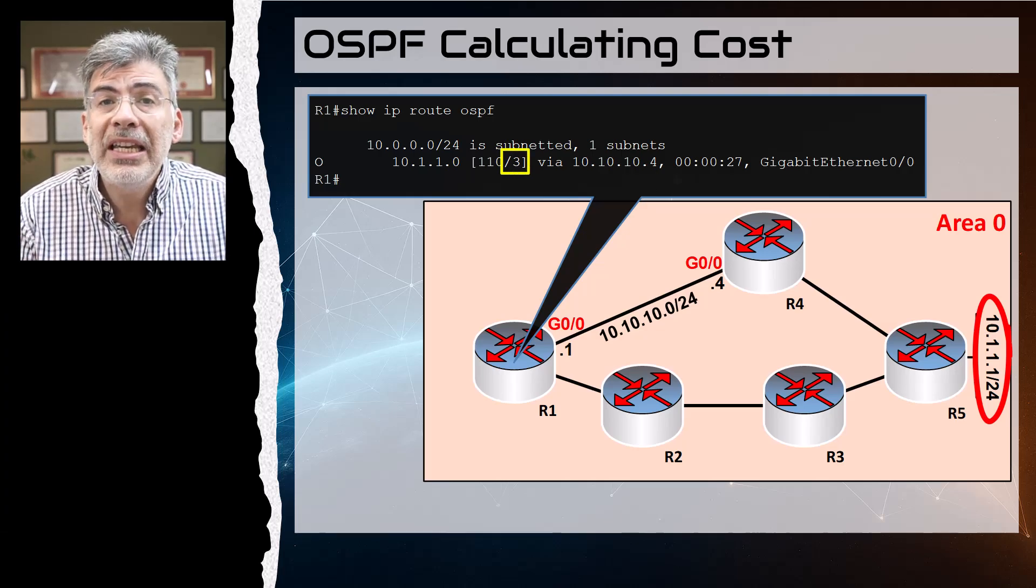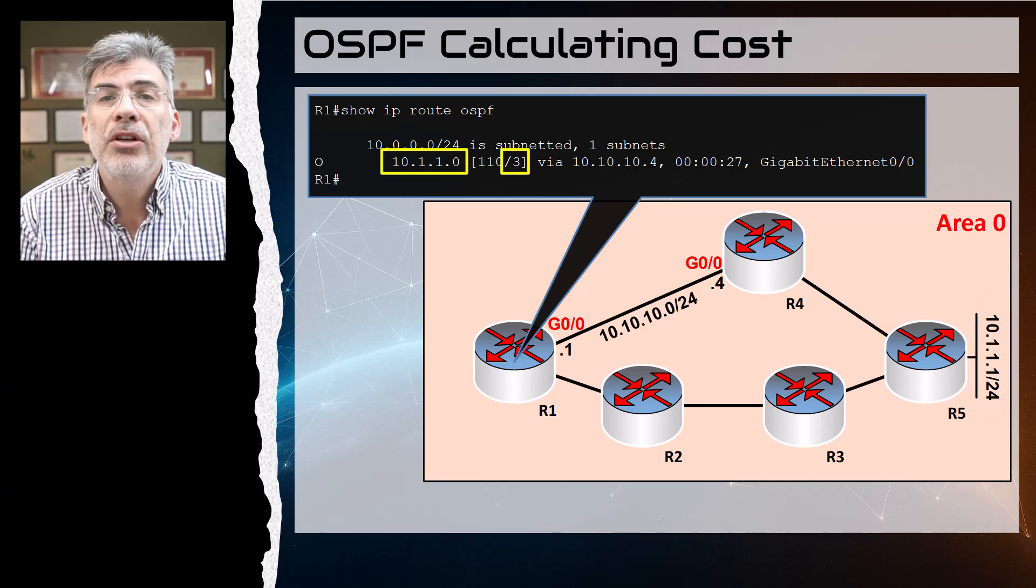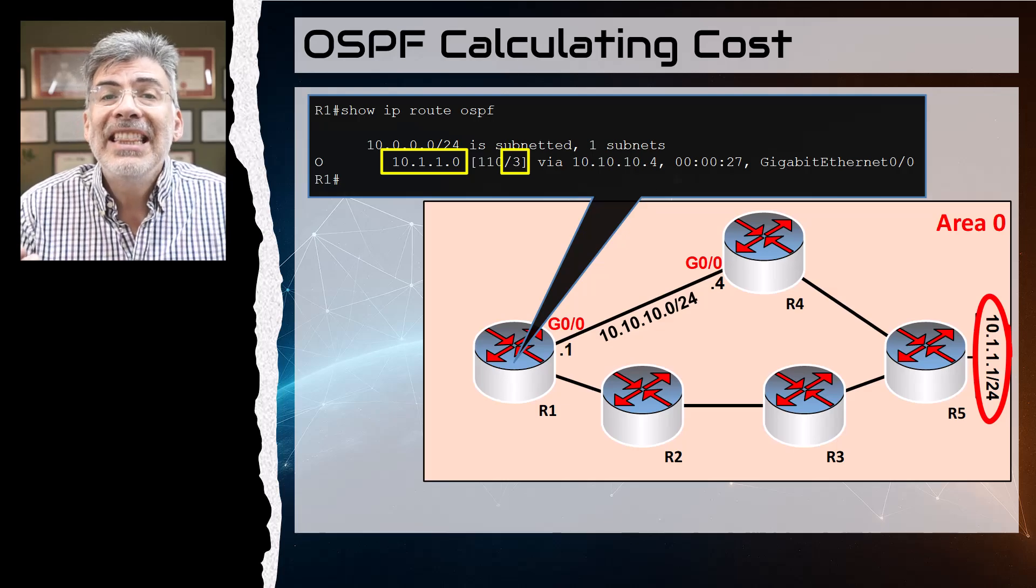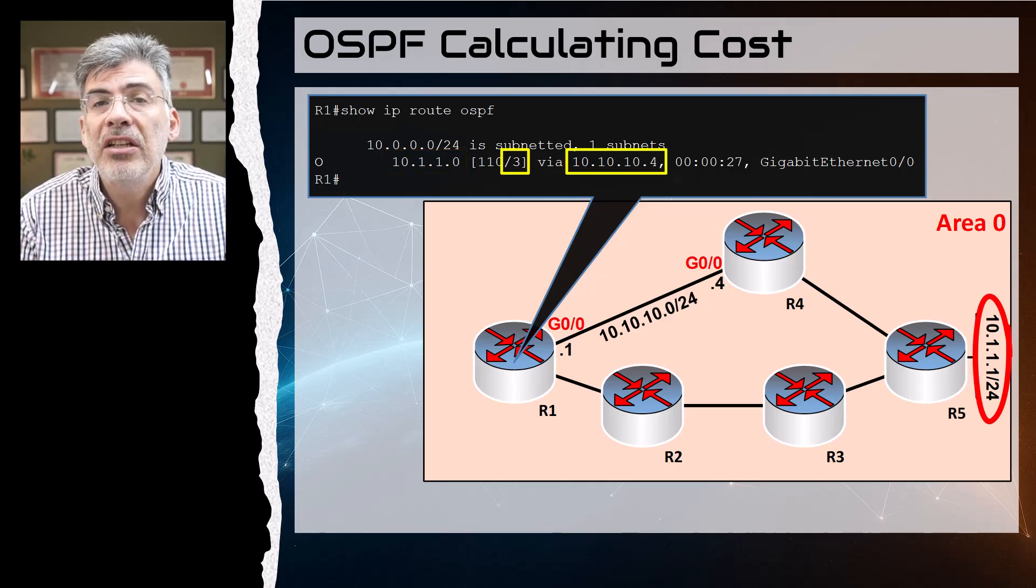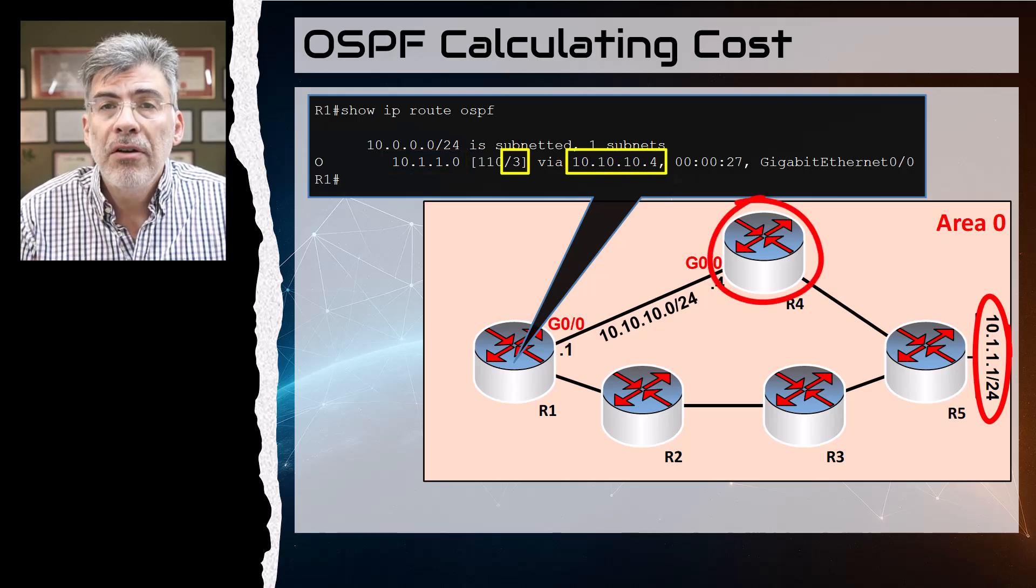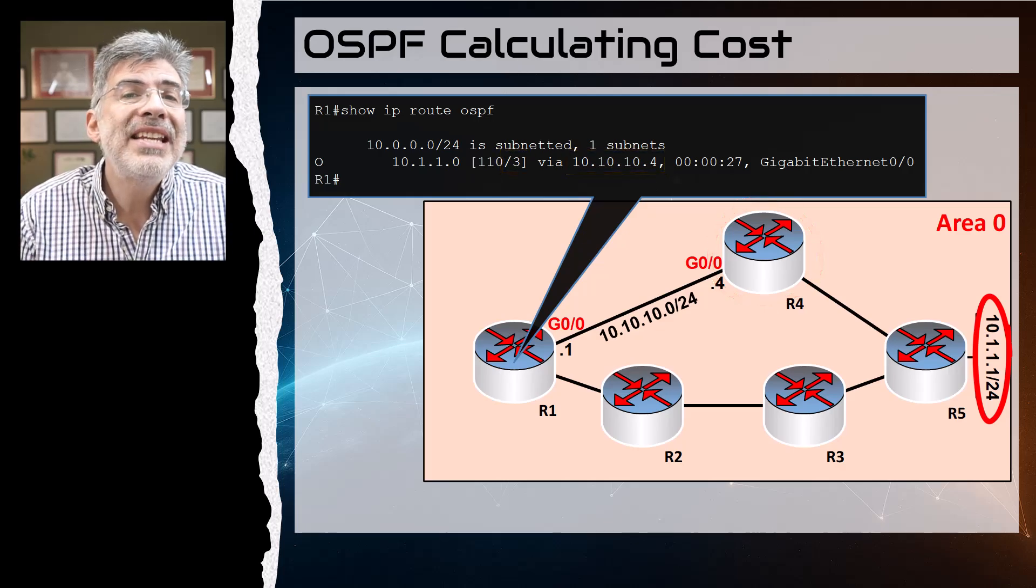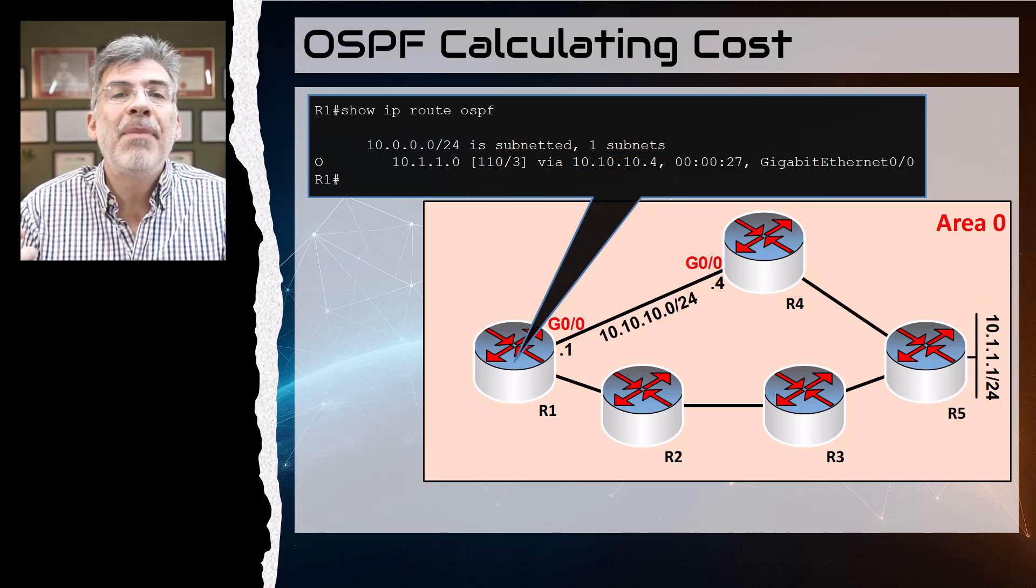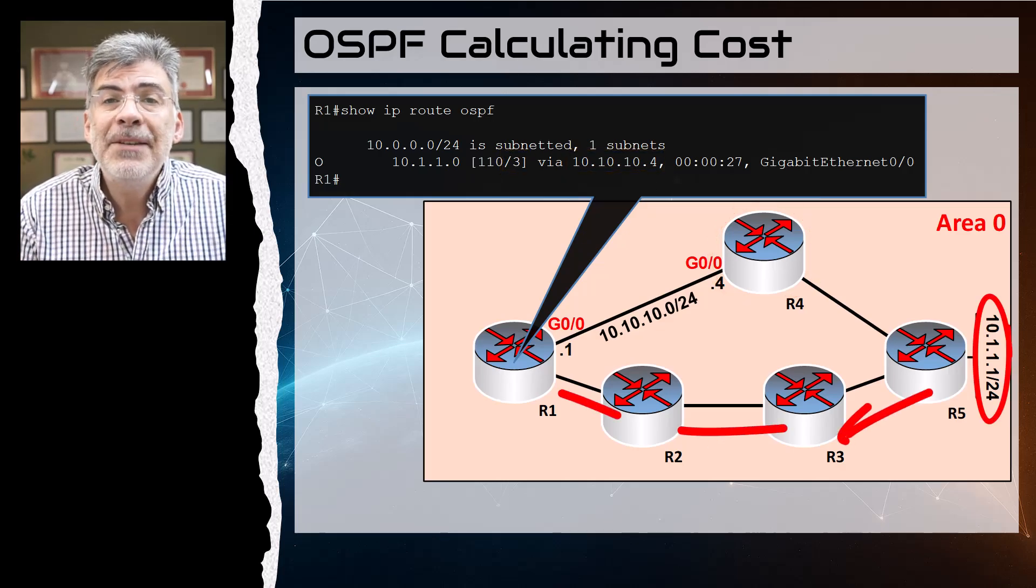The second number is the cost. Now you see a cost of three here for the 10.1.1.0/24 network and the next hop IP of 10.10.10.4, which is R4.